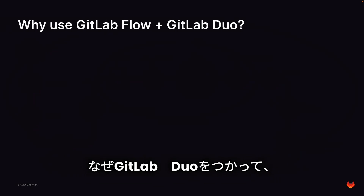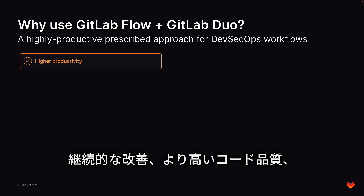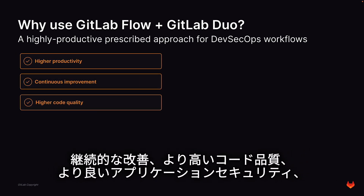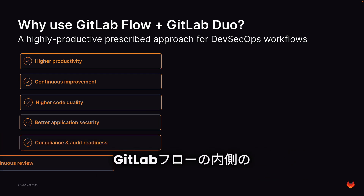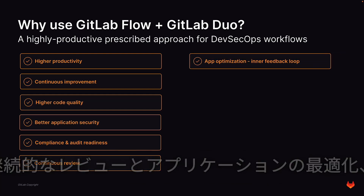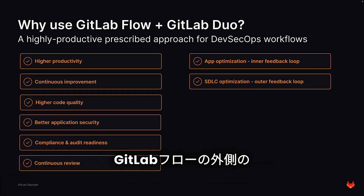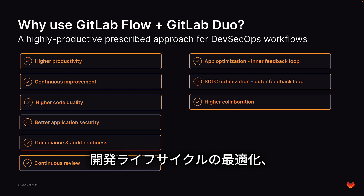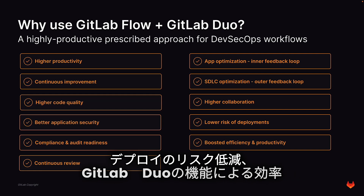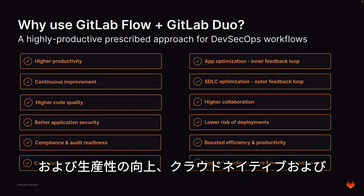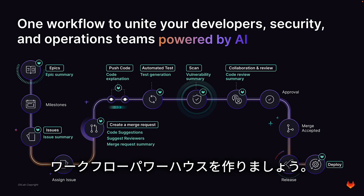Why use GitLab Flow with GitLab Duo? Combined, they can help you achieve higher productivity, continuous improvement, higher code quality, better application security, compliance and audit readiness, continuous review, and application optimization via the GitLab Flow inner feedback loop. They also provide development lifecycle optimization via the GitLab Flow outer feedback loop, high collaboration, lower risk for deployments, boosted efficiency and productivity via GitLab Duo capabilities, and support for cloud-native and non-cloud-native applications. Combined, GitLab Flow and GitLab Duo form a workflow powerhouse.